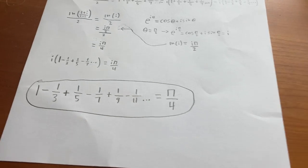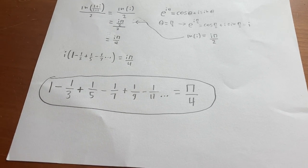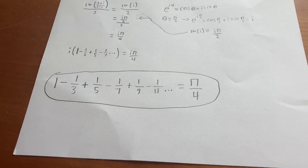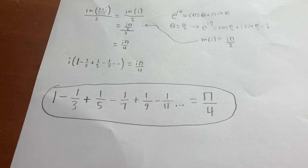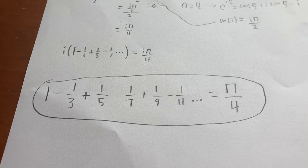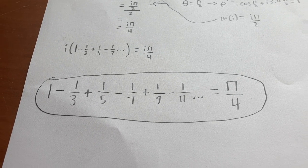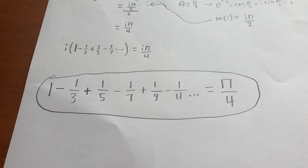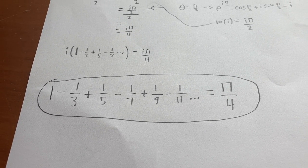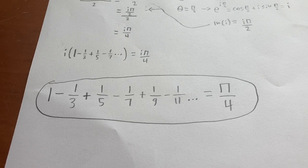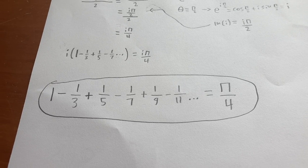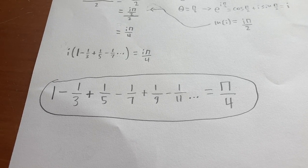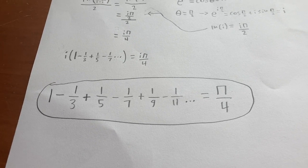In this video, I'm going to be proving this identity that you see right here that I've circled, which says that 1 minus 1 third plus 1 fifth minus 1 seventh plus 1 ninth minus 1 eleventh forever, where you alternate between adding and subtracting, is exactly equal to pi divided by 4.